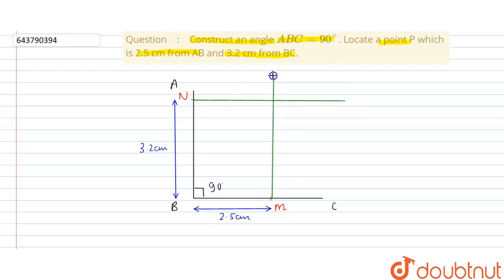So this is our line. Where these two lines cut this is our point P. This is our point P. So this is our solution of this problem.